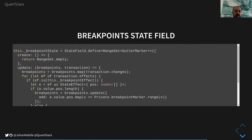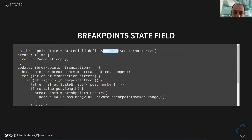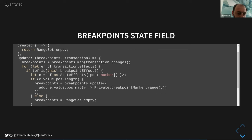We define markers and decorations. For highlighting we directly use the line constructor from the decoration class with a CSS style. For the breakpoint marker we inherit from the gutter marker class and implement the toDOM method — we create a text node and all styling is done through CSS.